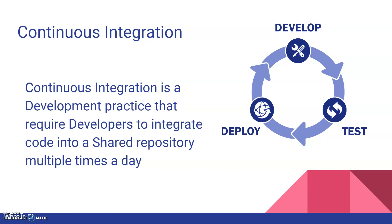Let's assume you have a team size of 10 people, each working on a different module and generating code. That code should be submitted to the shared repository. Once any developer commits their code to the shared repository, it should be validated automatically - tested automatically - and the developer will immediately get a response on whether it passed or failed. If it passed, it goes for deployment or further staging. If it failed, the developer knows immediately what to fix, since they have a fresh mindset.